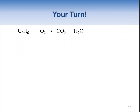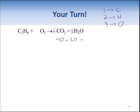C₂H₆ burns in oxygen in air, producing carbon dioxide and H₂O — a combustion reaction. To balance: first carbons — we have two carbons on the reactant side, so we need two CO₂ on the product side. For hydrogens, C₂H₆ has six hydrogens, so we need three water molecules. For oxygens, we have four from carbon dioxide and three from water, a total of seven oxygens.